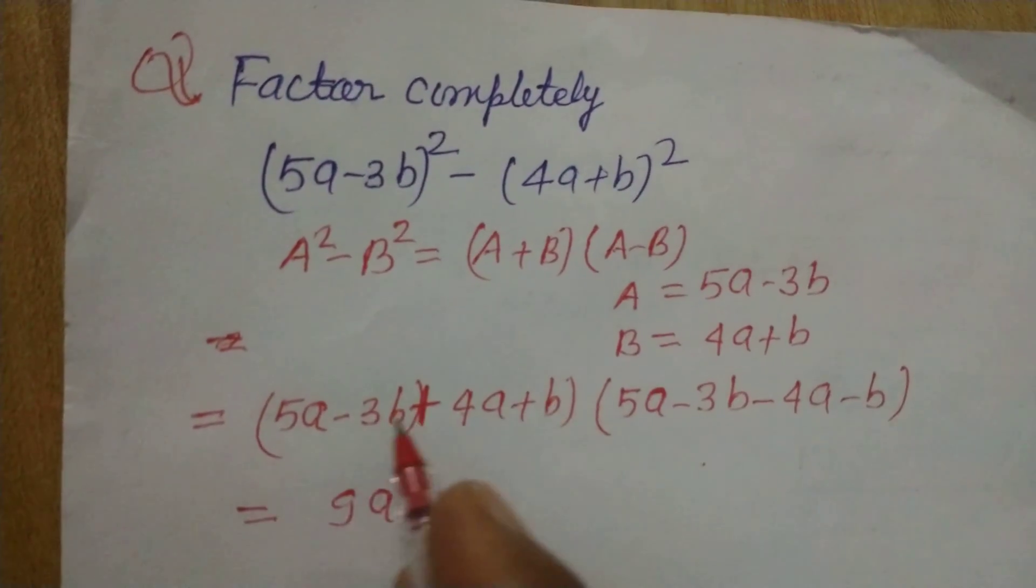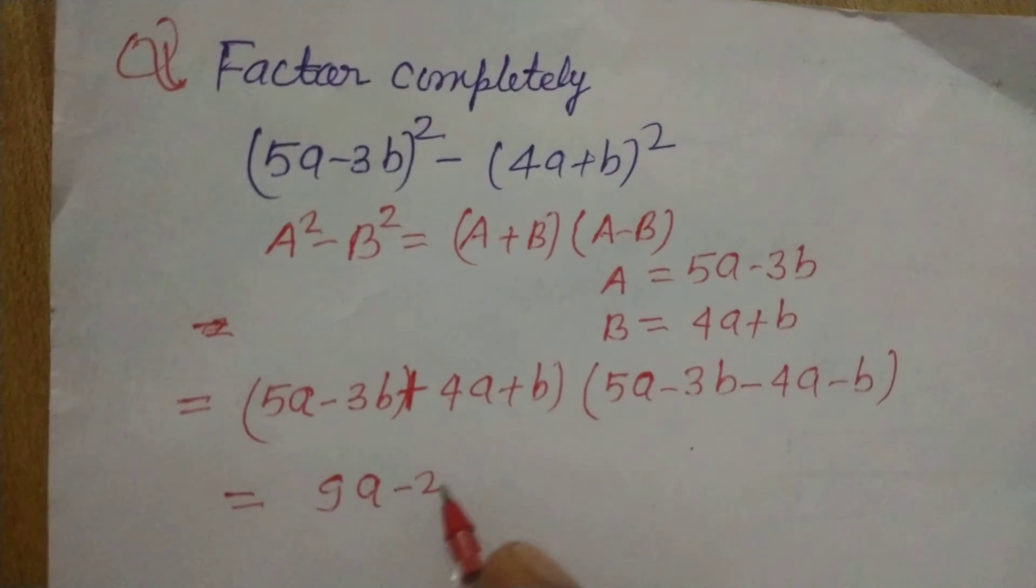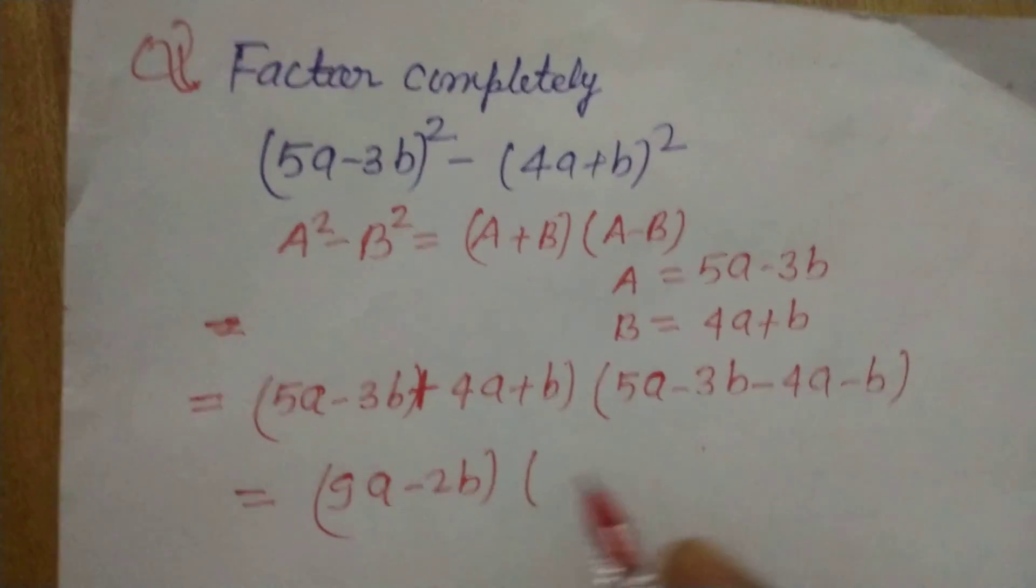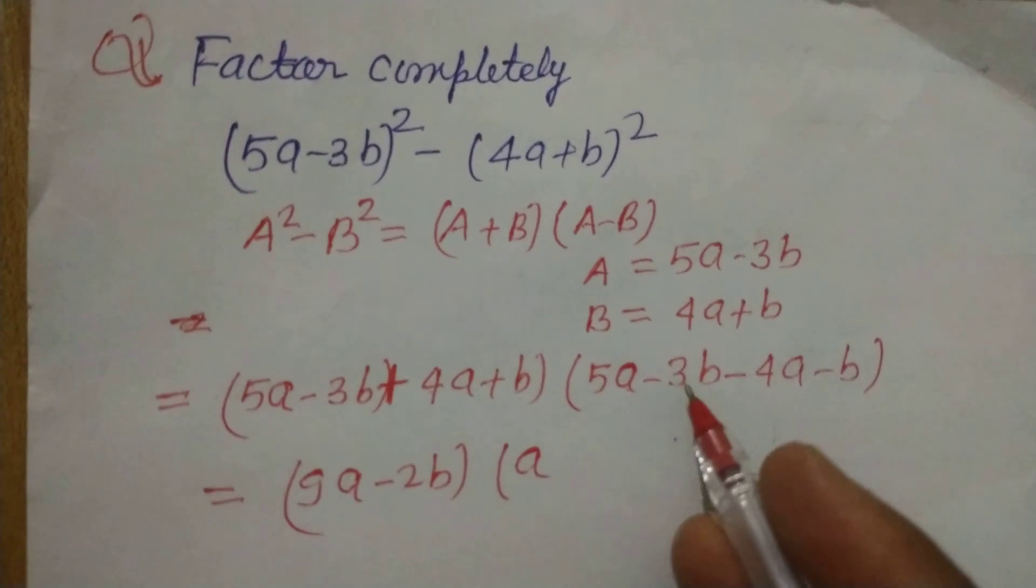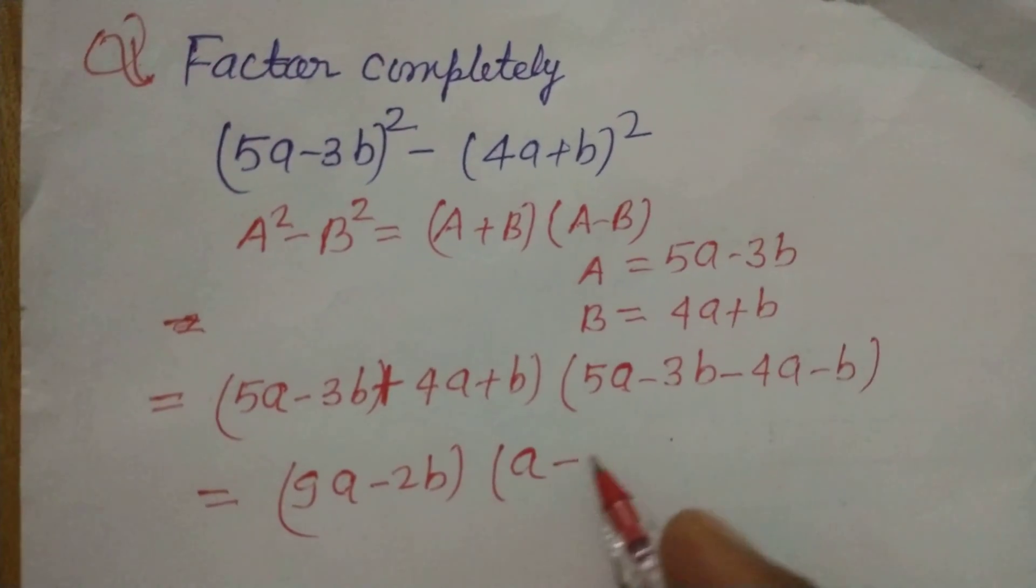And b minus 3b, this is minus 2b. And 5a minus 4a, this is a, minus 3b minus b, this is minus 4b.